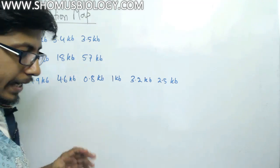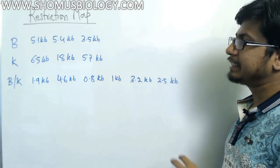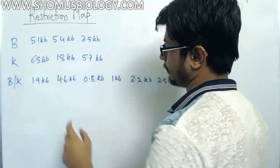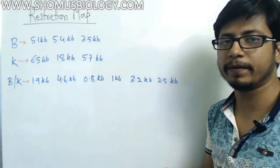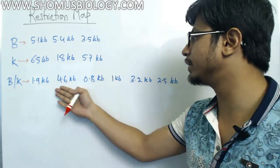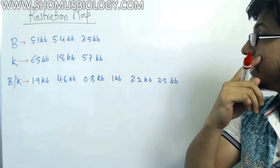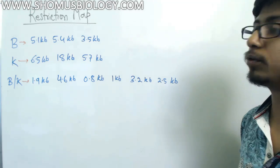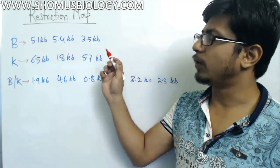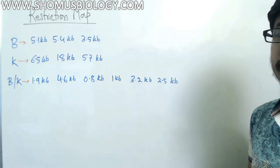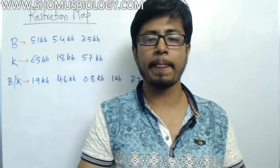Now let's look at the second example. As I told you, the questions become more complicated when more fragments are provided. This problem also uses two separate restriction enzymes, denoted B and K, plus their double digest. The number of fragments from the double digest is quite high. Adding them: 5.1 + 5.4 + 10.5 + 0.5 gives 14 for one enzyme; 6.5 + 1.8 + 5.7 also gives 14. They always add up to 14. This is circular DNA — a plasmid — so you need to construct the restriction map of the plasmid.